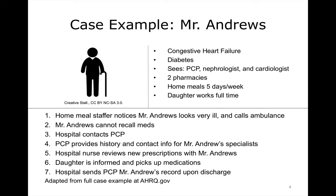We can begin with a case example of coordinated care from the Association for Healthcare Quality and Research's Care Coordination Measures Atlas. In this case, Mr. Andrews is a 70-year-old man with congestive heart failure and diabetes. He uses a cane when walking and recently has had some mild memory problems. During a recent meal delivery, the program staffer noticed that Mr. Andrews seemed very ill. He called an ambulance and Mr. Andrews was taken to the emergency department, where he was diagnosed with a congestive heart failure exacerbation and was admitted.